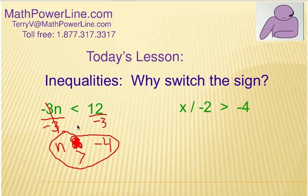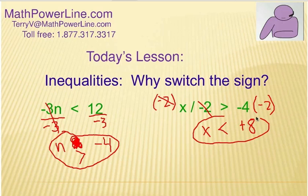So why do we switch it? Well, the rule says because we're dividing by a negative. What about this? X divided by negative 2 is greater than negative 4. Well, to solve that, we are going to multiply both sides by the negative 2. And so it'll look like this, if you're going to show your steps.